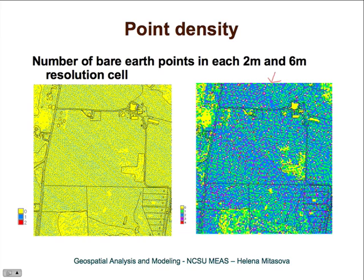There are no points where buildings are located because those points were removed from the bare earth dataset. When we lower the resolution to six meters, we have much greater variety in point density. There are still a few grid cells with no points — those are where the buildings are — and in some forest areas there are no bare ground returns. In open areas, however, some grid cells have as many as three or four points per cell.